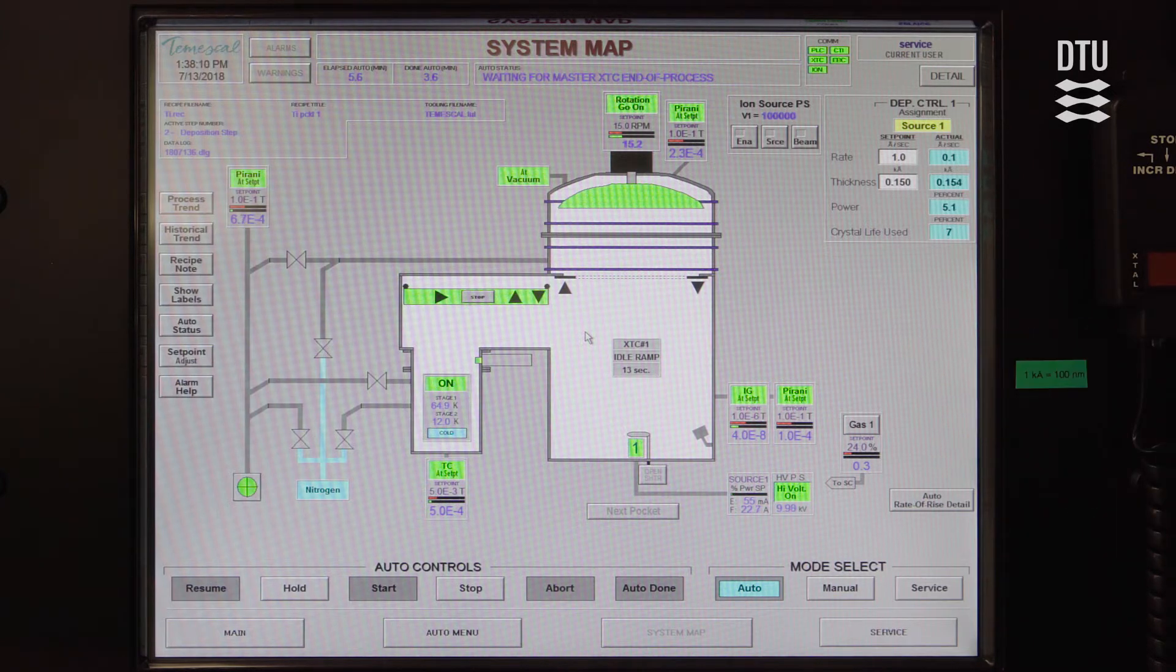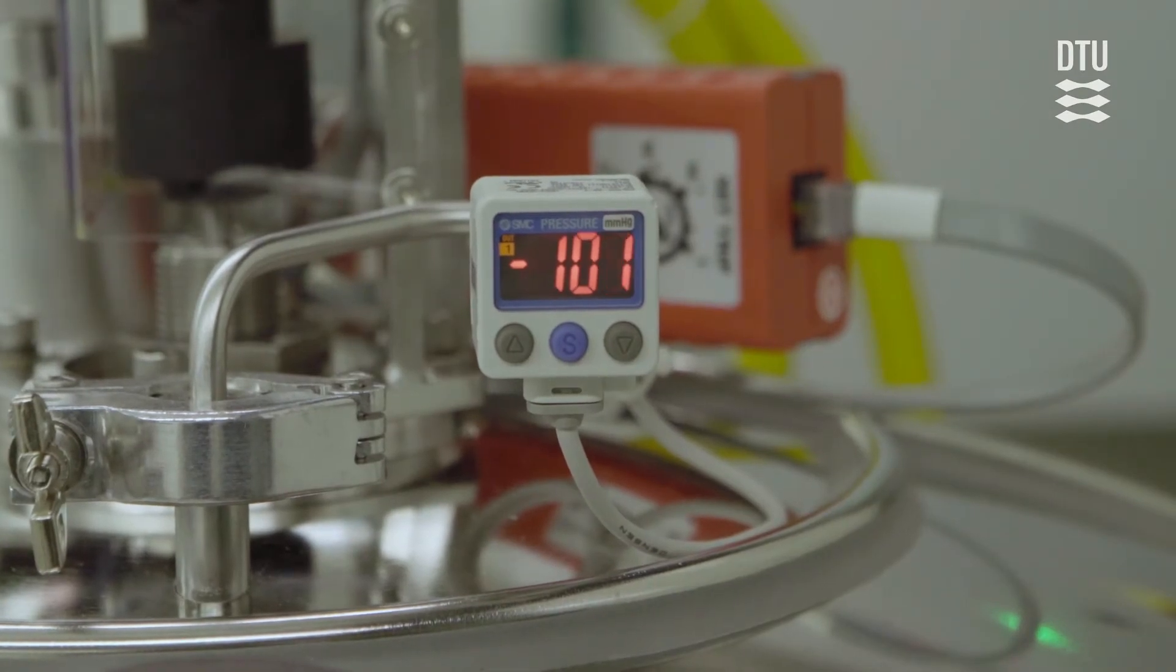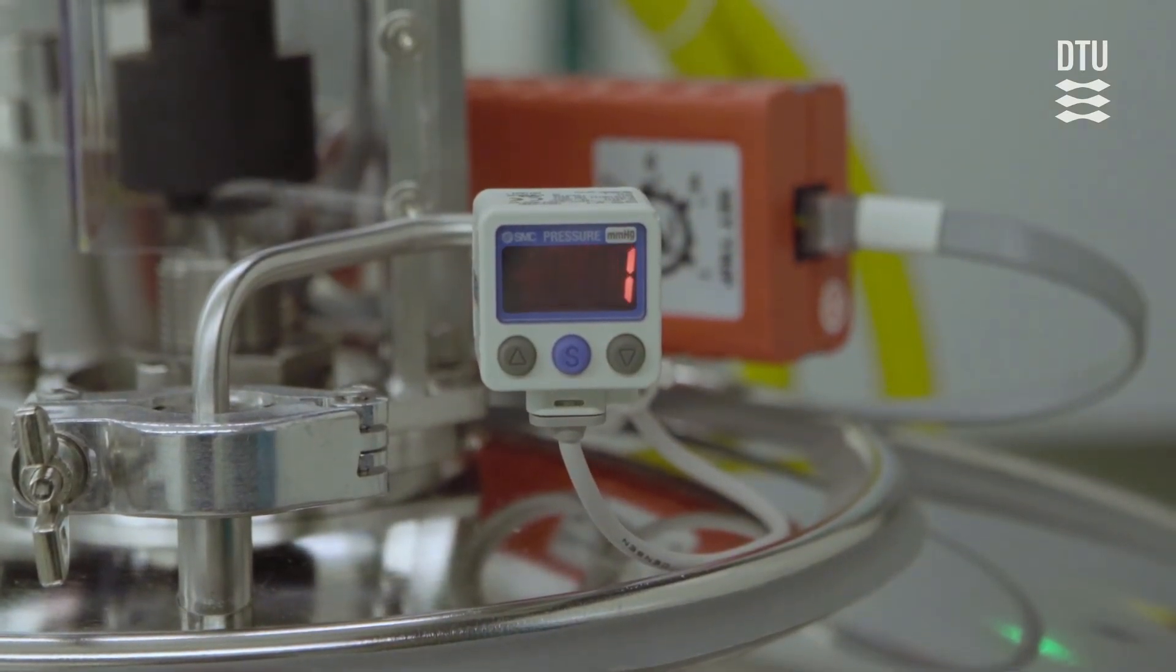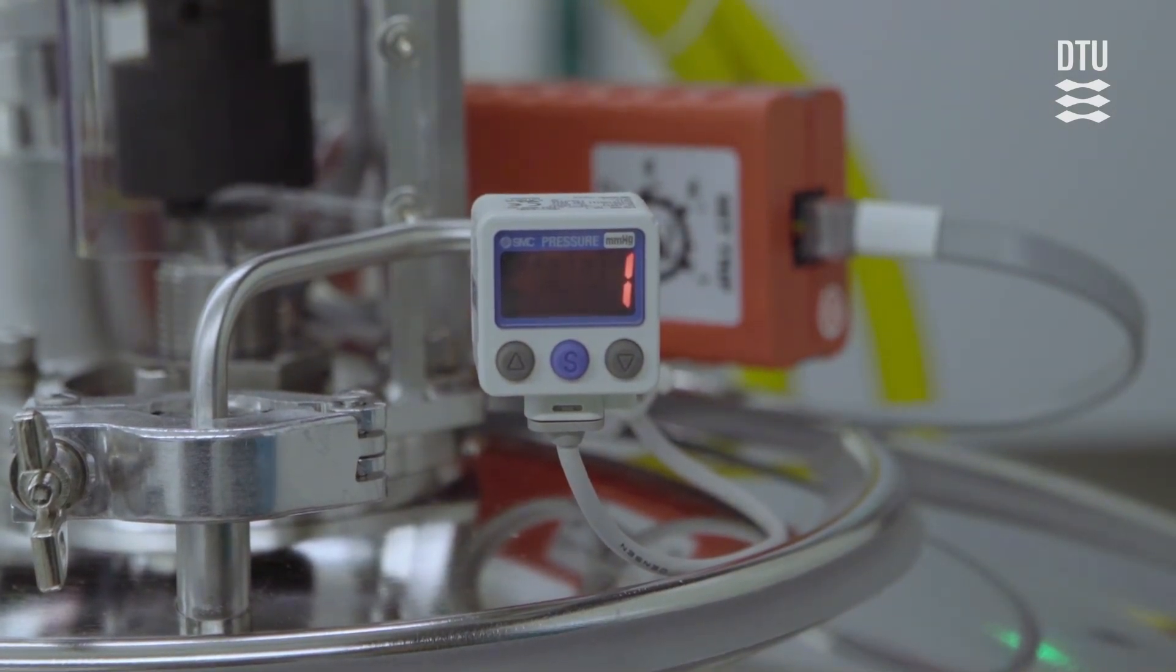So now the source is powering down and then afterwards there will be some cool time where the wafers have a chance to cool off a little bit. Because then in most of our recipes, in all the standard recipes, the load lock will vent automatically after the deposition. Yes, so now that we're venting the chamber, we see that the pressure is rising and the high-pressure pressure gauge on the outside of the chamber.